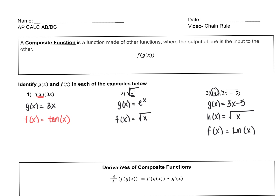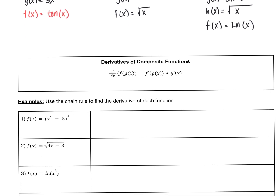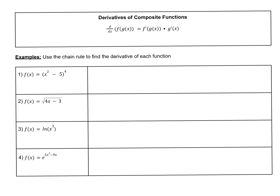So how does this apply to derivatives? There's a formula for derivatives of composite functions. When finding the derivative of a composite function, the rule says you take the derivative of the outside function, and then multiply it by the derivative of the inside function.